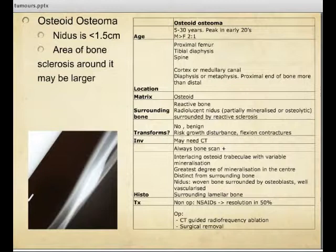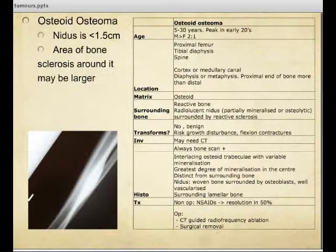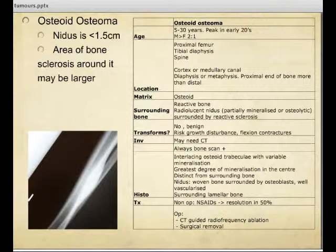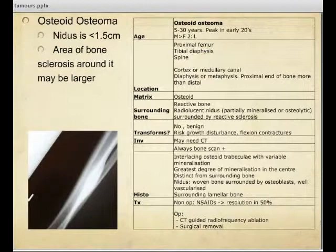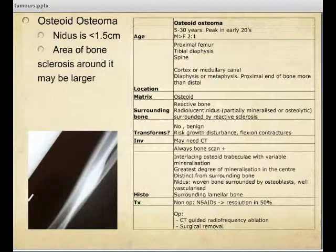Treatment for osteoid osteomas includes non-steroidal anti-inflammatories, and otherwise ablation or removal of the bone. There are four main features: a sharp, round or oval lesion less than two centimetres in diameter, a homogeneous dense centre, and a surrounding sclerotic rim of one to two millimetres. The issues with osteoid osteomas are growth disturbance and flexion contractures rather than malignant transformation, and they are always bone scan positive.